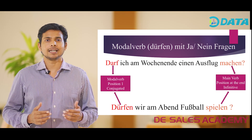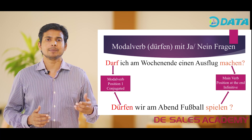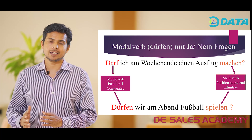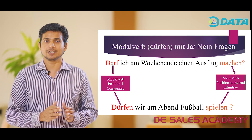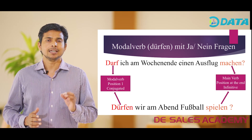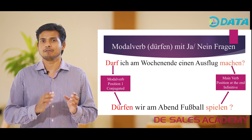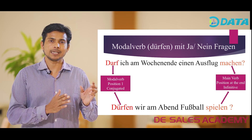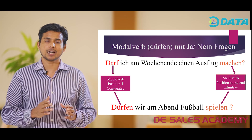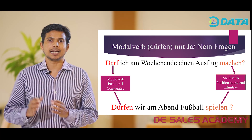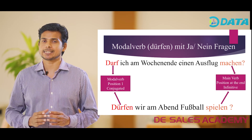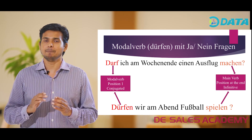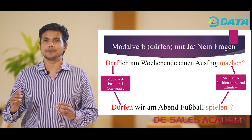Now let us consider how the modal verb Dürfen is used along with Ja/Nein-Fragen, yes or no questions. There is a slight change: the modal verb is placed in the first position and conjugated, and the main verb is placed at the end of the sentence in its infinitive form. The main verb does not undergo any kind of changes.